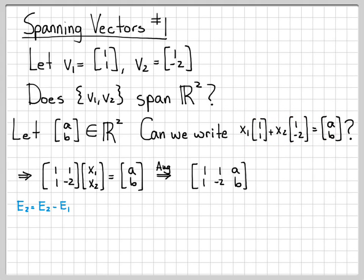Let's let E2, equation 2, equal equation 2 minus equation 1. Equation 1 is going to be unchanged. Equation 2, we'll have a 0 here because 1 minus 1 is 0, and -2 minus -1 is -3. And then b minus a is b minus a.